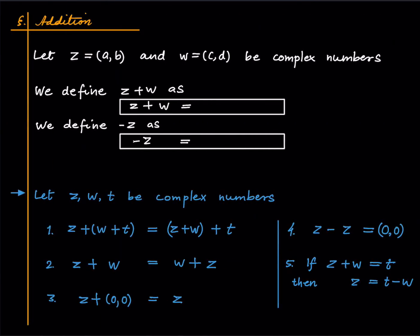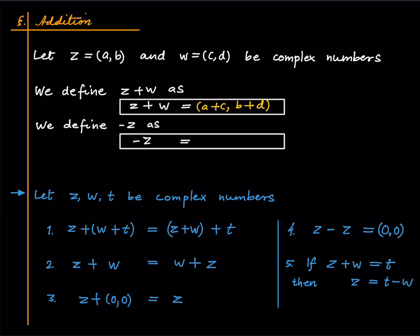And now we can actually define some arithmetic on complex numbers. Suppose Z and W are two complex numbers, then we define Z plus W as coordinate-wise addition — just add the x-coordinates and the y-coordinates and put them in an ordered pair. The geometric interpretation is pretty clear: if this is Z and this is W, then Z plus W is the point obtained by applying the parallelogram law. There is a point obtained by completing this parallelogram, and that is Z plus W.